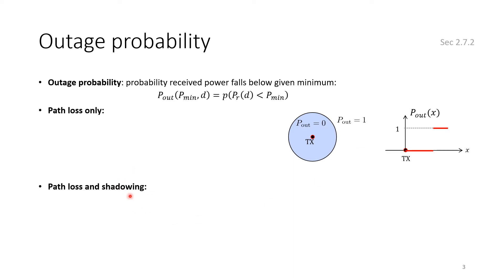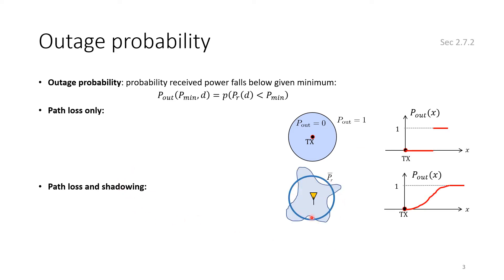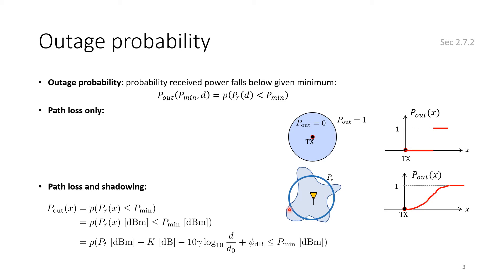If we consider shadowing, the received power will not decay in a perfect circle. We get a strange shape because of the average path loss combined with the shadowing effect. As you go away from the transmitter, the probability of outage increases, but you can also be close and have an obstruction due to shadowing, so distance alone is not sufficient.